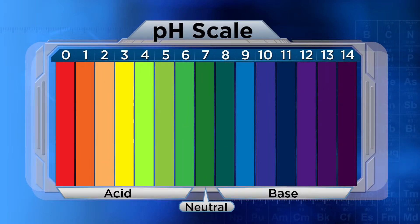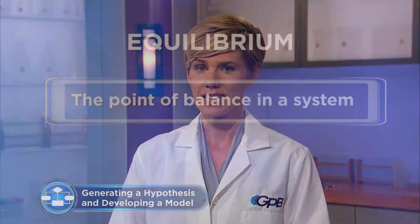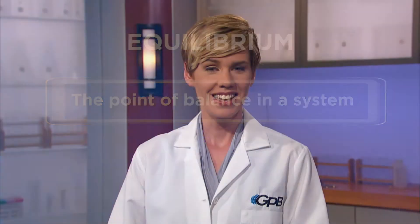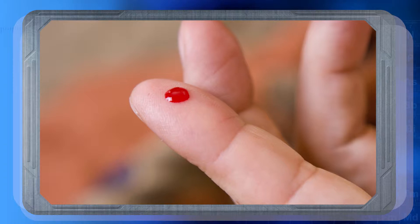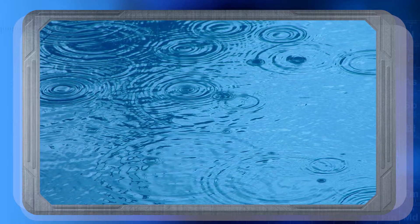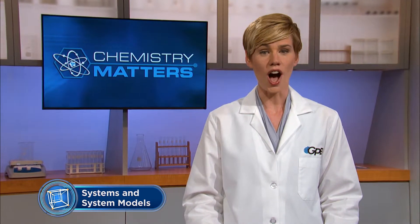Most everyone has heard of pH, but I wonder how familiar you are with what it represents and how we're able to determine it. Before we further explore pH, we need to examine a very important equilibrium reaction. Equilibrium is the point of balance in a system, like when someone balances on a unicycle. An equilibrium reaction is constantly taking place anywhere there's water — in our blood, our saliva, the shampoo we use, and even the rain that falls from the clouds. We'll explore the concept of equilibrium in depth in Unit 10, but there's a very important equilibrium system we must introduce right now: the equilibrium caused by the ionization of water.